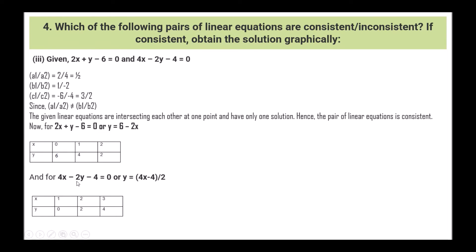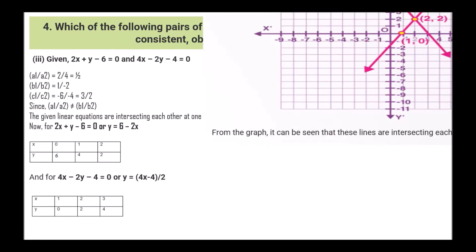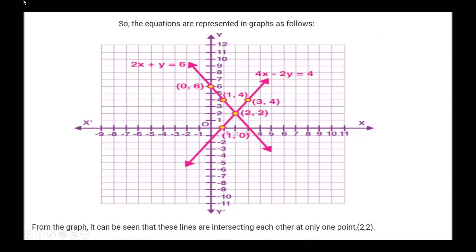For 4x - 2y - 4 = 0, y = (4x - 4)/2: if x = 1, y = 0; x = 2, y = 2; x = 3, y = 4. This is the graphical representation of the question. It can be seen that these lines are intersecting each other at only one point, that is (2, 2).